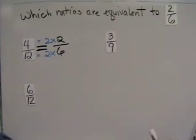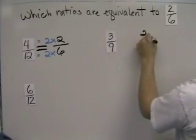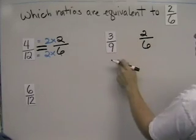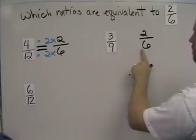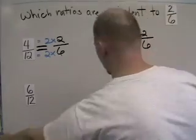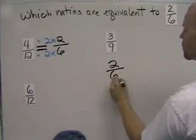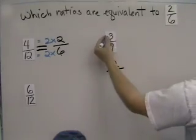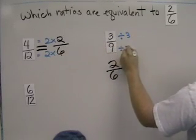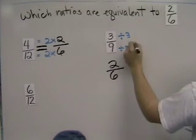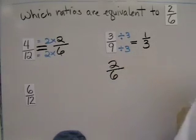Let's take a look at three-ninths. This one's a little toughy because with three-ninths and two-sixths, you can't easily see a number you can multiply by two to get three, and multiply six to get nine. So we're going to reduce both of those fractions. Three-ninths — we can divide both the numerator and the denominator by three, so three-ninths reduces to one-third. Three divided by three is one, and nine divided by three is three.